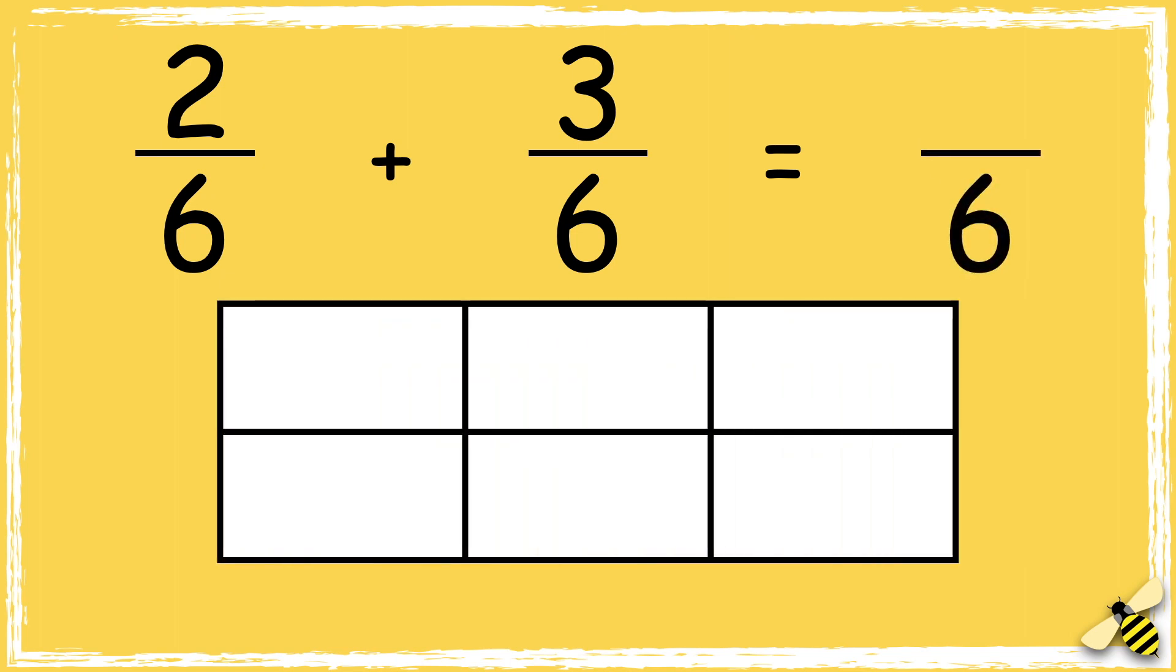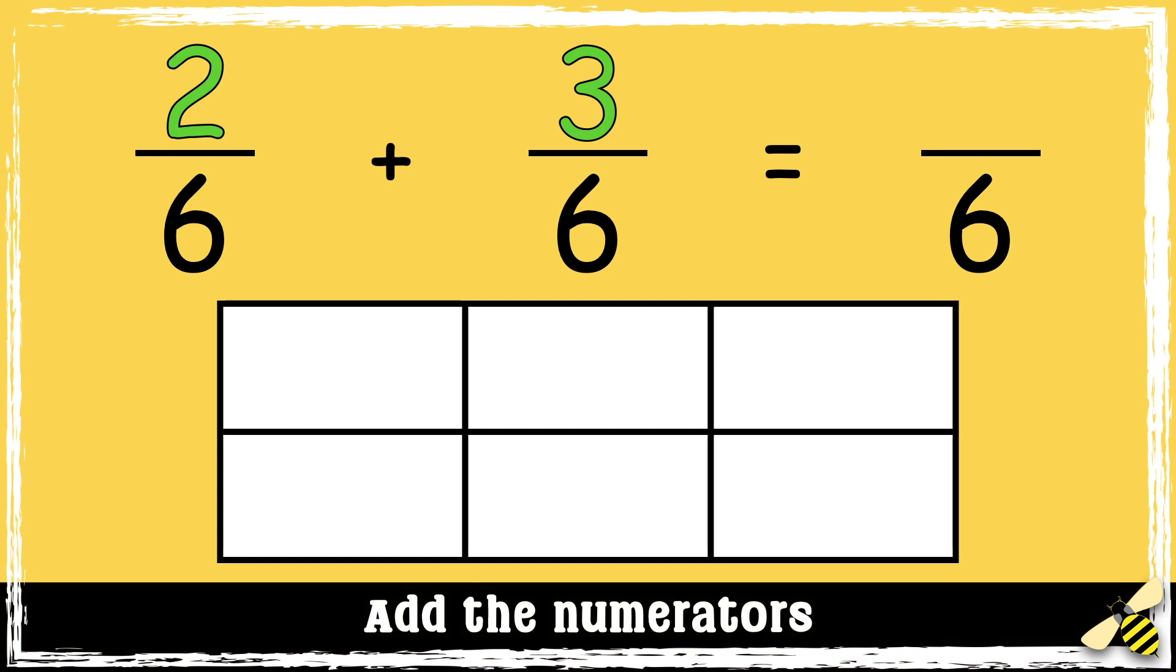Here is a calculation: 2 sixths add 3 sixths. When we add fractions with the same denominator, the denominator stays the same. We only add the numerators. So 2 add 3 equals 5. The answer is 5 sixths.